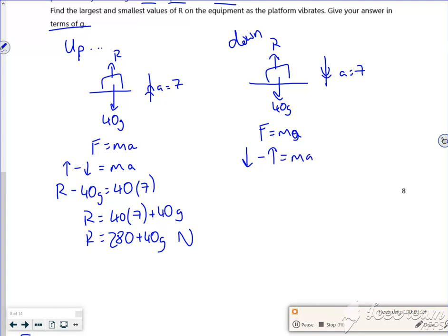This time we've got 40g minus R is 40 times 7. So 40g minus 280 is equal to R. You can see that this one's going to be the largest and this one's going to be the smallest.